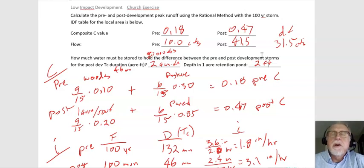Now we're going to also have to cover our volume control, that we can't let the post development volume be any more than the pre development volume. And to do that we'll use the NRCS method. So that will be our next step.